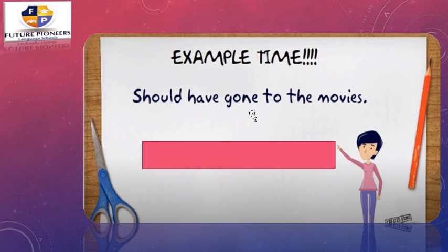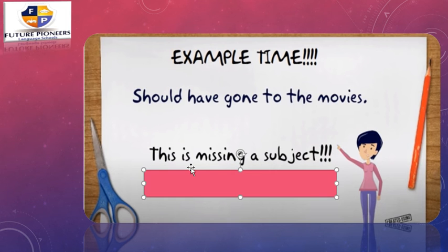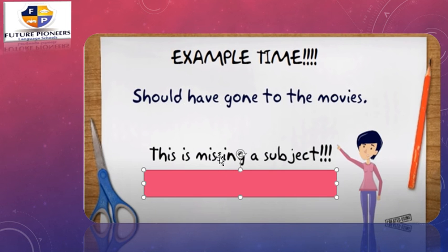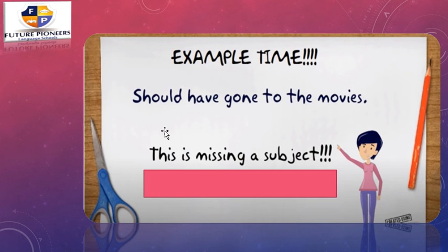Let's see an example: 'Should have gone to the movies.' Who should have gone to the movies? We don't know, because there is no subject. This is not a sentence — this is a fragment, because we don't have a subject. We don't know who should have gone to the movies. There is a verb — 'should have gone' — but there is no subject. So this is a fragment. Remember: if you want to write a sentence, make sure it has a subject and a verb.